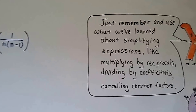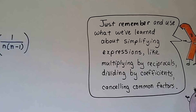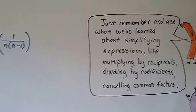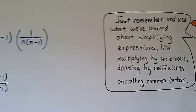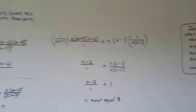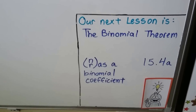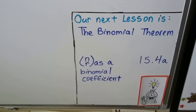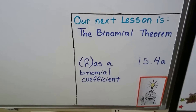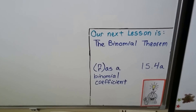Remember to use what we've learned in algebra: simplifying expressions by multiplying by reciprocals, dividing by coefficients, and canceling out common factors. I hope this helped. If it did, hit the like button. Next we're going to talk about the binomial theorem and n choose r as a binomial coefficient — that's lesson 15.4a.